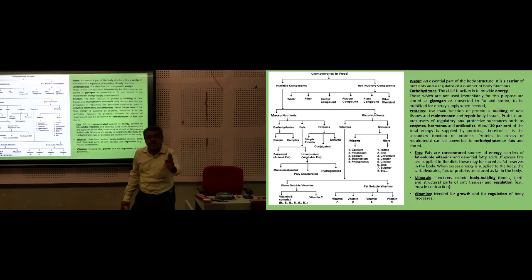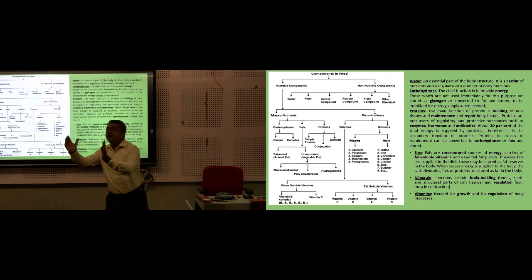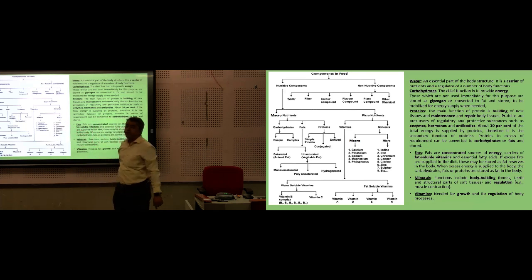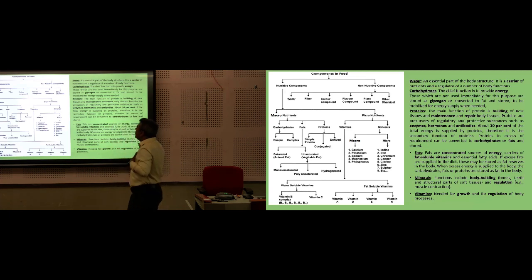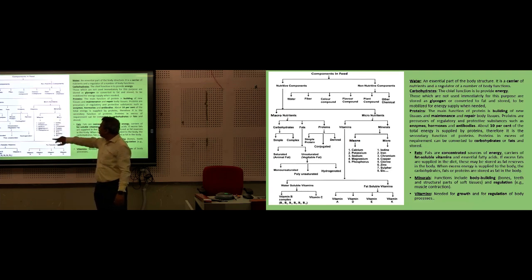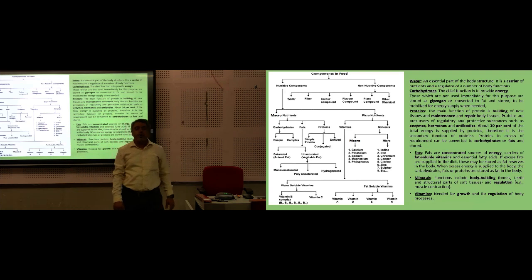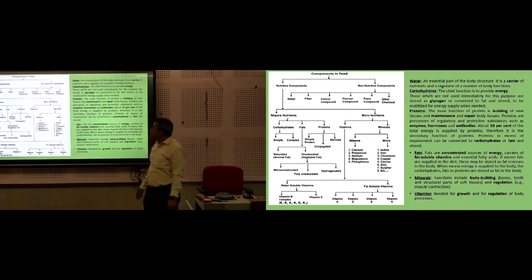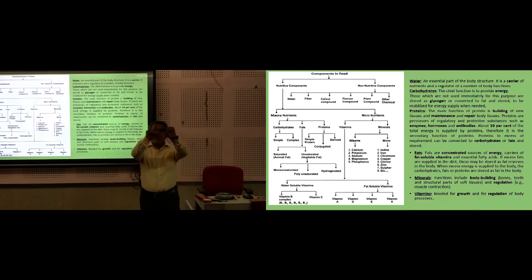Minerals have macrominerals and microminerals. Macrominerals are required in larger quantities; microminerals are required in smaller quantities — in microgram amounts. Just as plants need NPK, Ca, Mg, and S for their growth, the body needs calcium, potassium, sodium, magnesium, and phosphorus — these are the five to six essential macrominerals. Microminerals required in microgram quantities include iodine, iron, chromium, copper, chlorine, zinc, and sulfur.